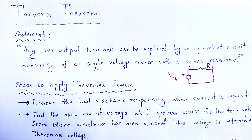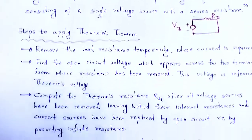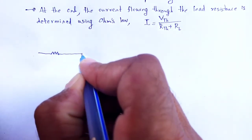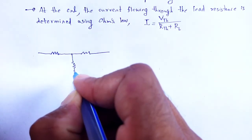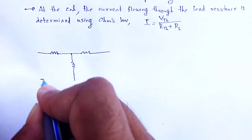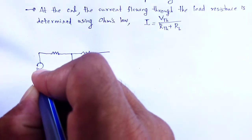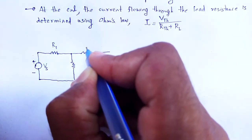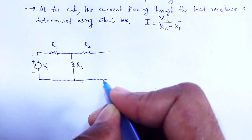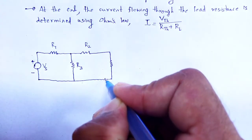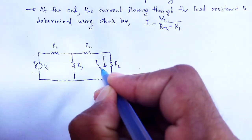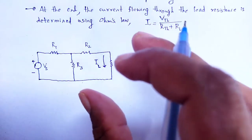Look here — how we can simplify an electrical circuit by using Thevenin's theorem. Let me consider an electrical circuit here: the resistors R1, R2, R3 are connected to the voltage source Vs, along with a load RL. The current through that load, IL, is to be evaluated.